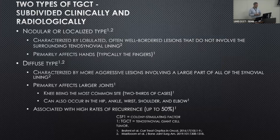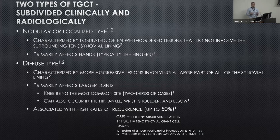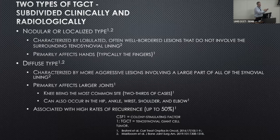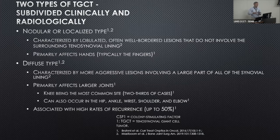There are two subtypes: the nodular type, which is just one small glob within a joint, or the diffuse type. The black box we don't know is that when we look at all these different subtypes under the microscope, they all look the same — the same CSF-1 expression. So we don't know why some people get nodular, which is easy to treat and never comes back, or why some get diffuse and may have one knee scope that resolves it, or diffuse that leads to multiple knee scopes, pexidartinib, clinical trials, and ultimately a really angry, unhappy joint.